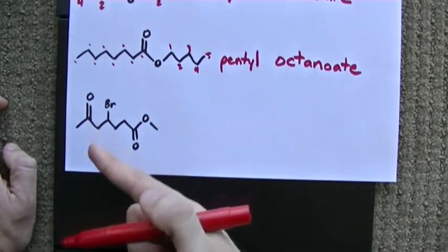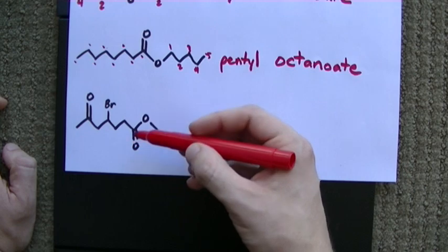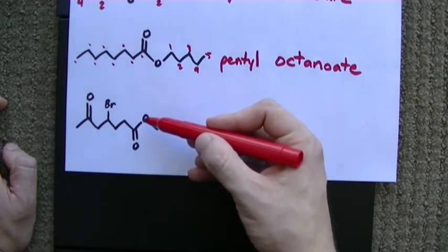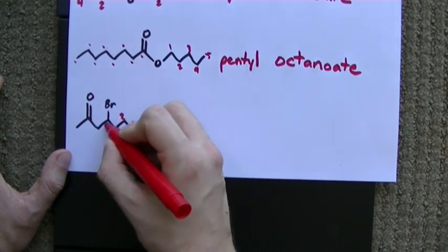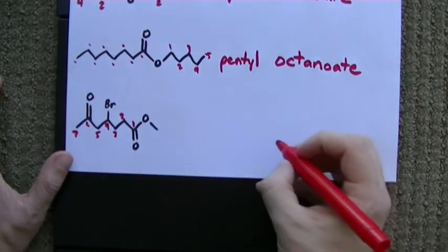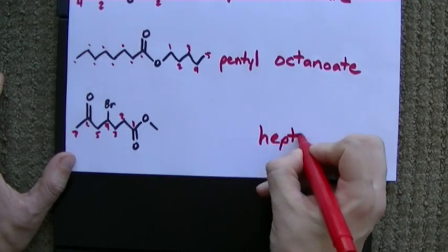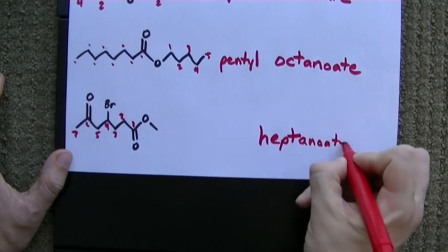Now, where's the ester linkage here? Remember, the ester linkage has a double bonded oxygen and a single bonded oxygen. So, carbon 1, 2, 3, 4, 5, 6, 7. That's hept, and it's all single bonds along that chain, so it's heptanoate.